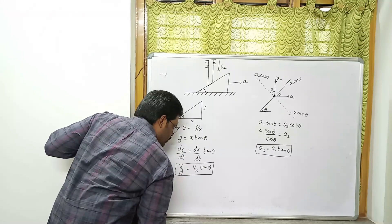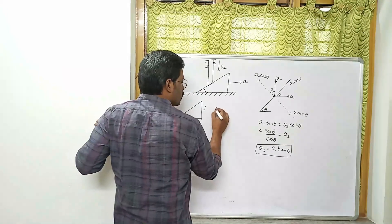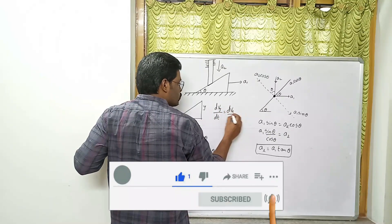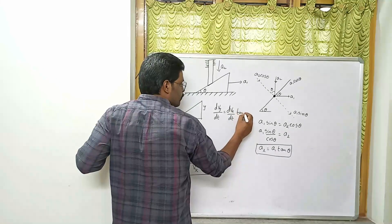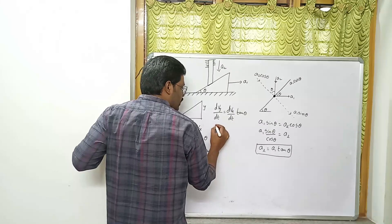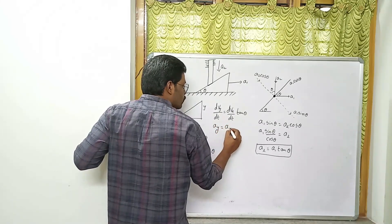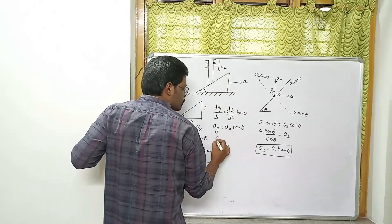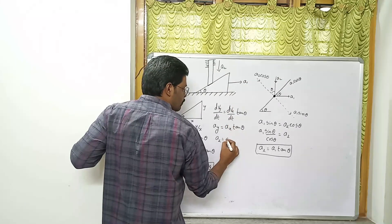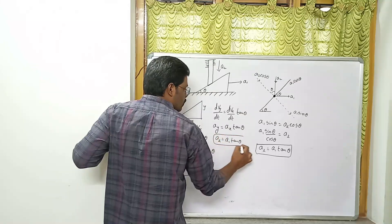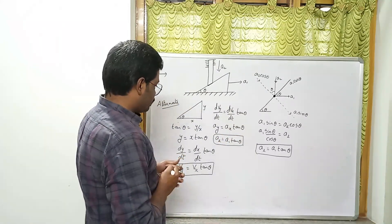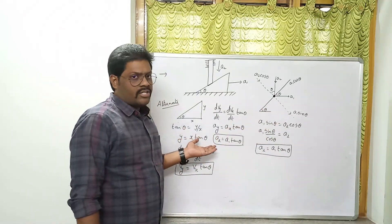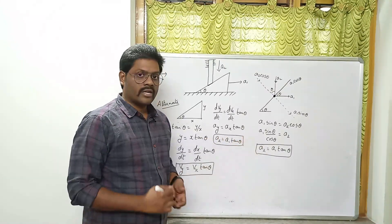So vy = vx·tanθ. Similarly, differentiating velocity with respect to time, dvy/dt = (dvx/dt)·tanθ, which gives ay = ax·tanθ. Here ay means a2 and ax means a1, so a2 = a1 tanθ. You can use the vectors method or the geometrical conditions method — in both cases you get the same answer.